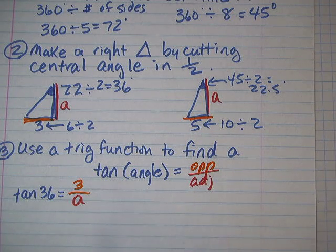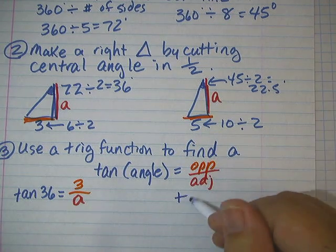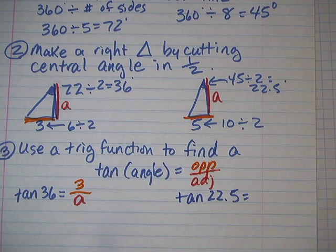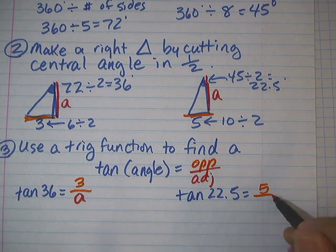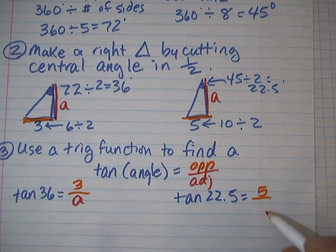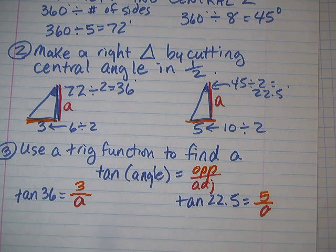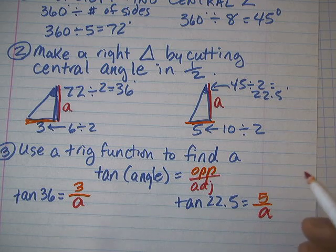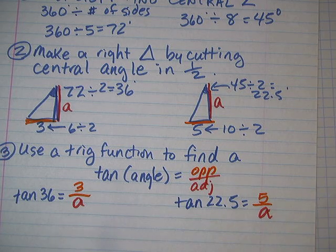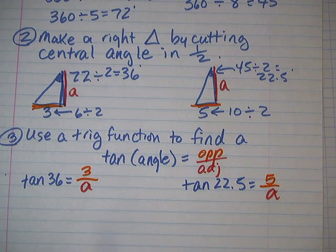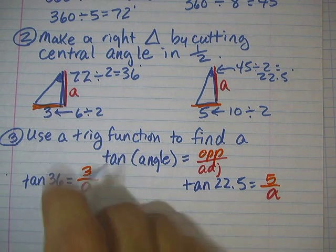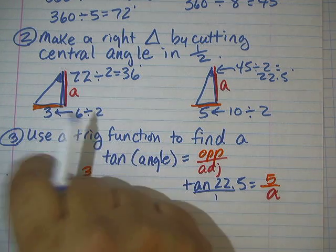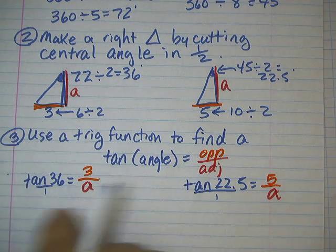Now, in both of these problems, when you're doing it and you know the edge, you're almost always going to end up with this apothem on bottom with the tangent function. So, how are we going to solve that? Well, the best way to get your unknown out of the bottom is to cross multiply. So, you put a little one underneath here. A little one underneath there. And you go a times this equals that times that. A times this equals that times that. So, let's start here. A times tangent of 36 equals 3. A times tangent of 22.5 equals 5.